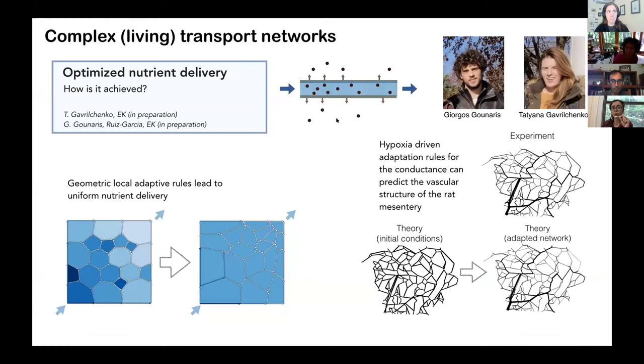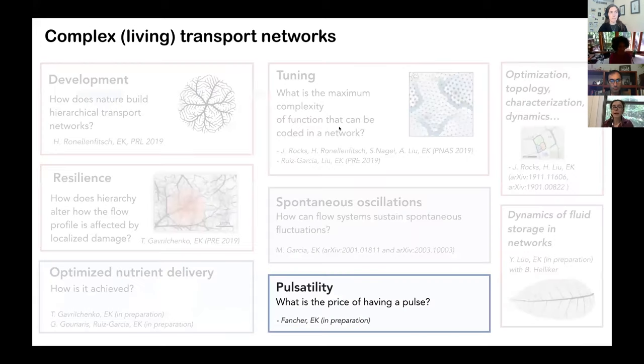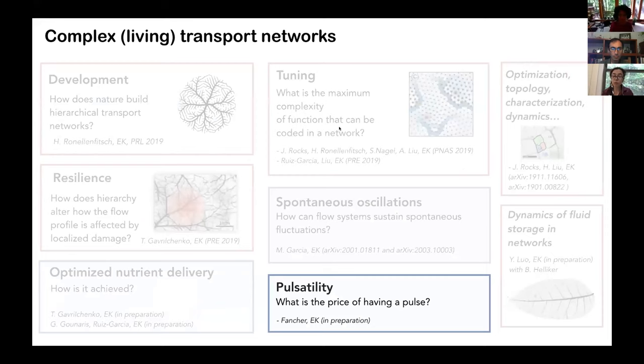And there are other things that we're looking at. For example, we're looking at not just flow, but what happens when the flow currents nutrients and these nutrients need to be uniformly delivered to the network. We are figuring out different ways where the network can self-organize based on local rules to reach a situation and a state where the nutrients are uniformly delivered. So these are just to give you some broad overview of some recent projects.